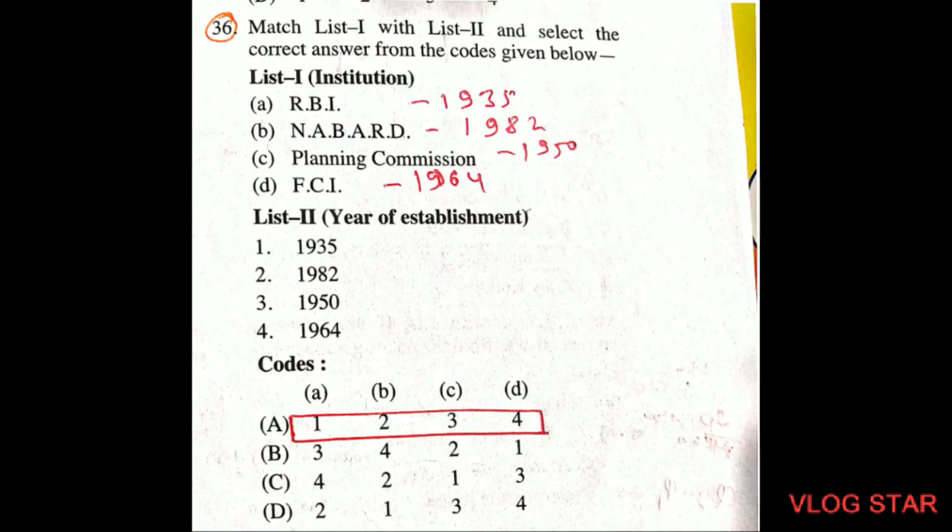Question number 36, matching again: RBI was established in 1935, NABARD came in 1982, Planning Commission in 1950, and FCI came in 1964. Option A is the right answer.